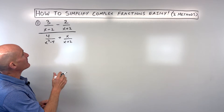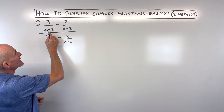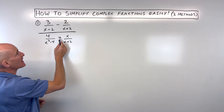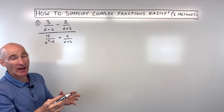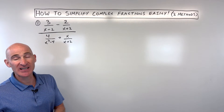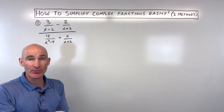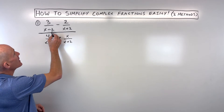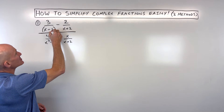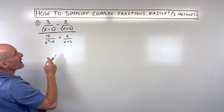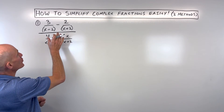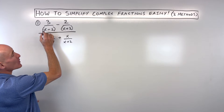The first method is to get common denominators for the numerator so we can combine these into one fraction, and get common denominators for the denominator so we can combine those into one fraction. Then this fraction bar right here, you can think of that as a division sign, and dividing is like multiplying by the reciprocal. So I'll look at these two fractions in the numerator. We've got this quantity x minus two and this quantity x plus two, and they really don't have anything in common — they're two different binomials.